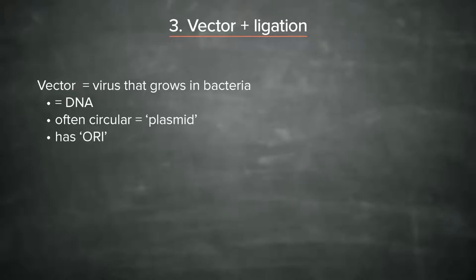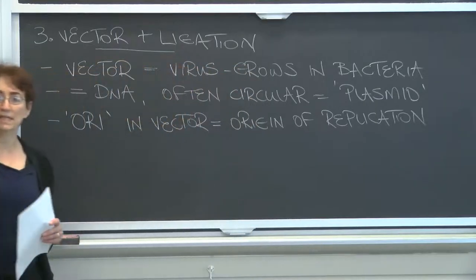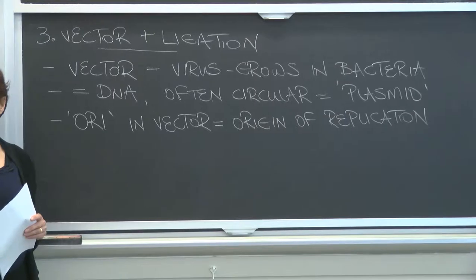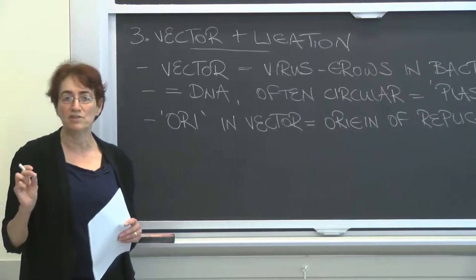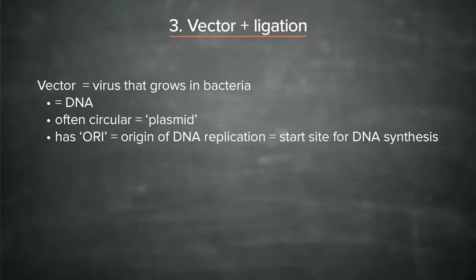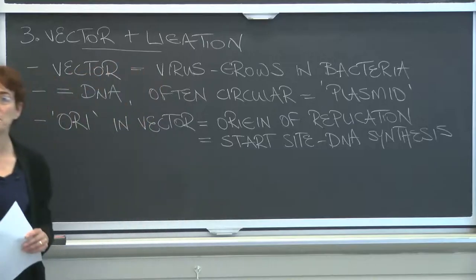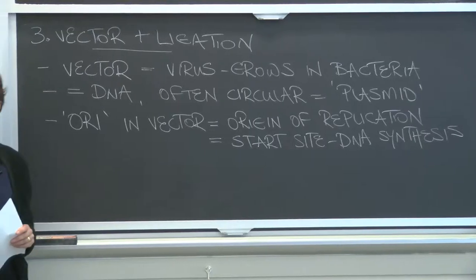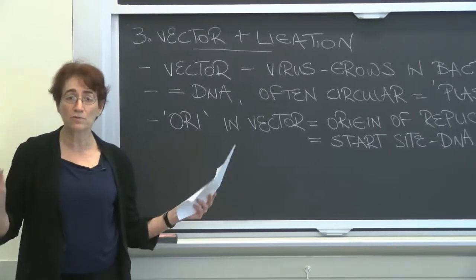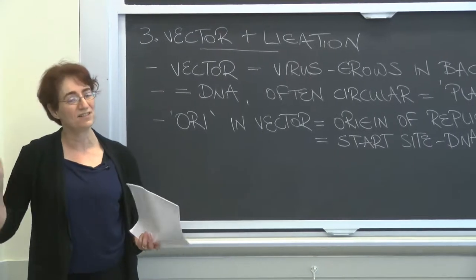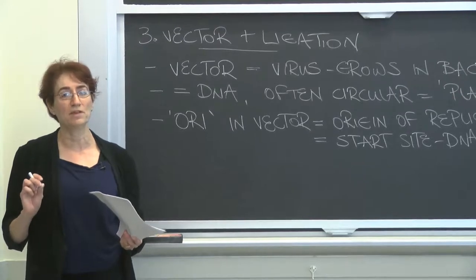This origin in the vector is an origin of replication, and this refers to DNA replication. The origin is a particular sequence in the plasmid that tells DNA replication to begin — it is a start site for DNA synthesis. In fact, it's not just plasmids and vectors that have origins of replication. Our own chromosomes do too.